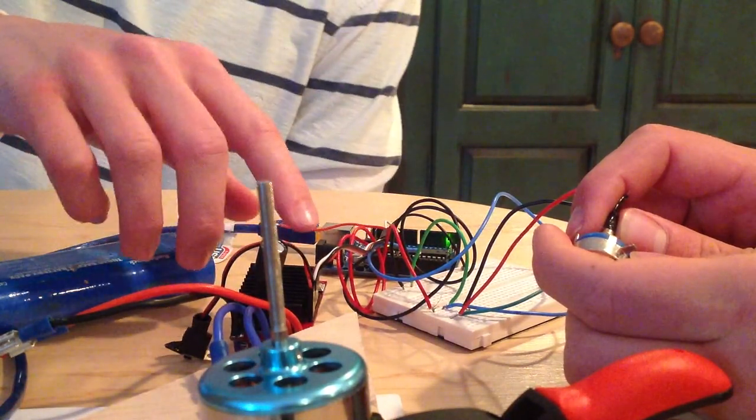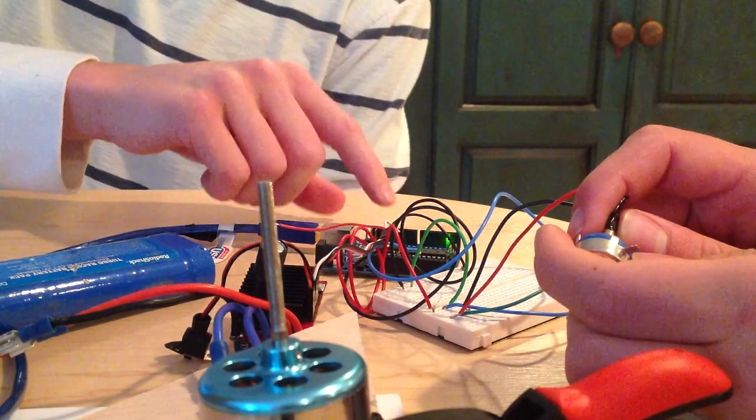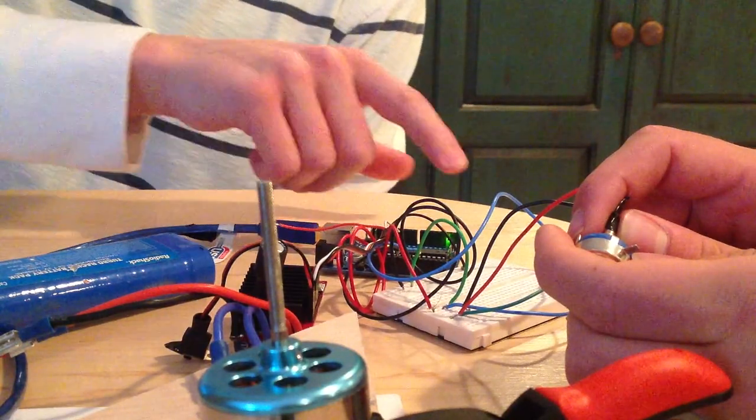On the electronic speed controller, just the data and the ground wires are connected to the Arduino on the PWM digital input and ground.